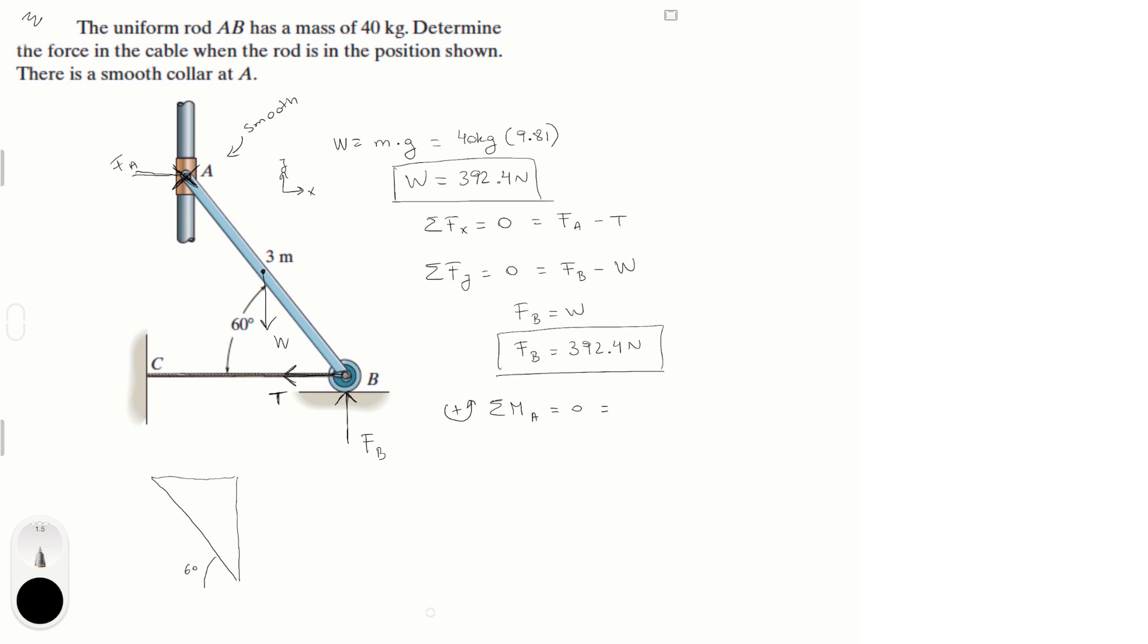We know that this is A and this is B, and let's call this X and let's call this Y. If this is 60, you know that this is 30 degrees. Because 60 plus 30 is 90 degrees and this is a 90 degree angle, correct? And we know that the length of the rod is 3, 3 meters right here.